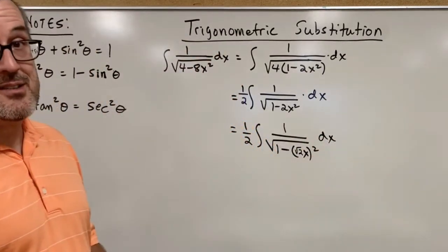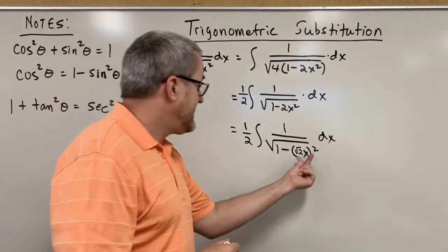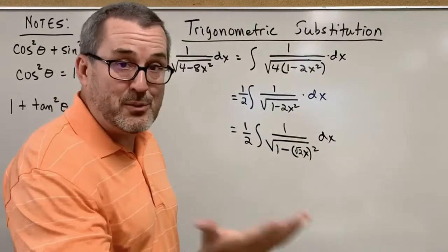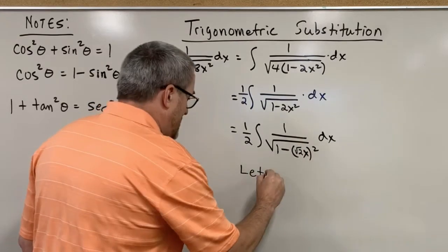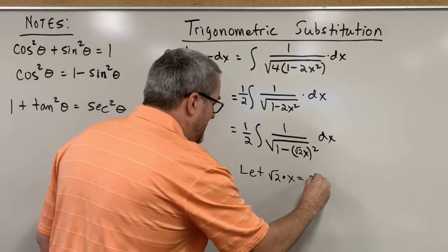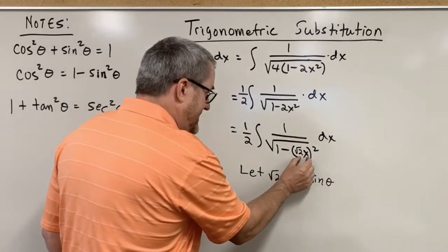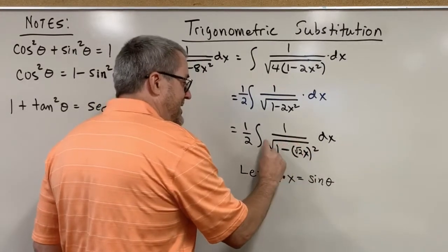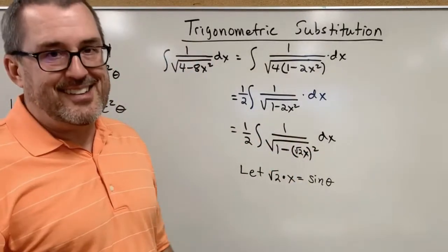Now what this does for us, I hope you see, is it sets us up for the 1 minus sine squared if we make a very deliberate and intentional move and then just deal with the consequences. The deliberate move is this: we're going to let the square root of 2 times x equal the sine of theta. Because if I make that move, then this becomes the sine of theta, and 1 minus sine of theta squared is cosine squared of theta. The square root of cosine squared is just cosine, and life is good.